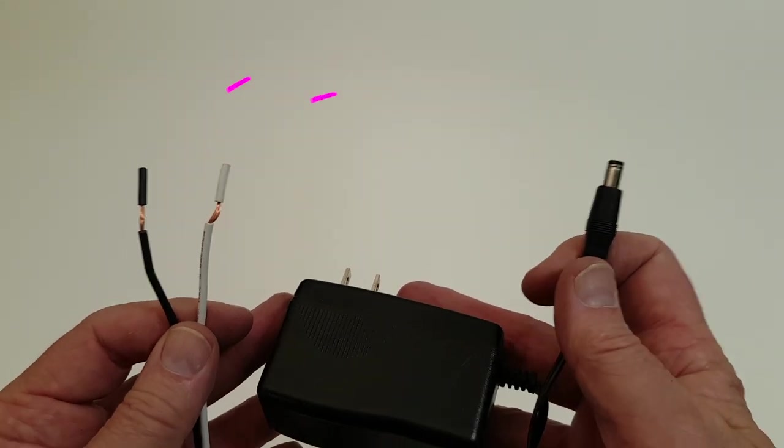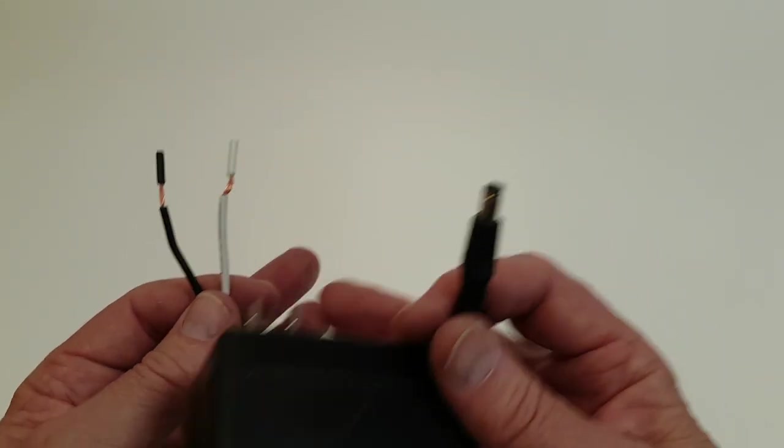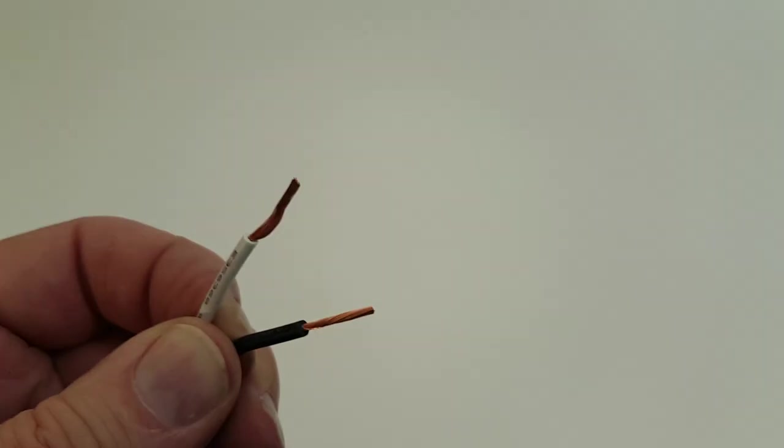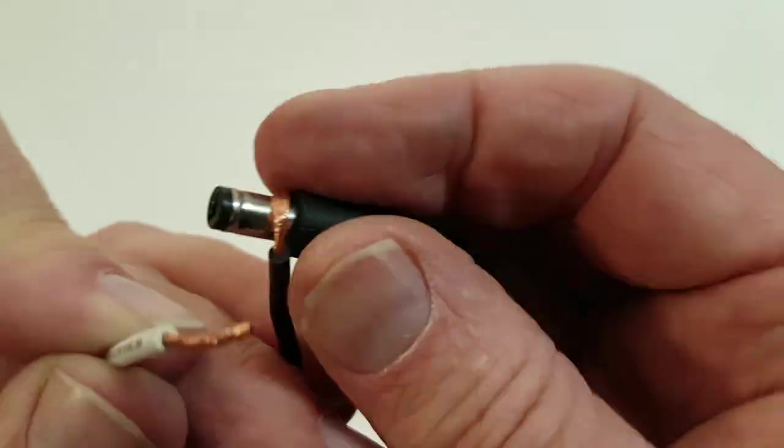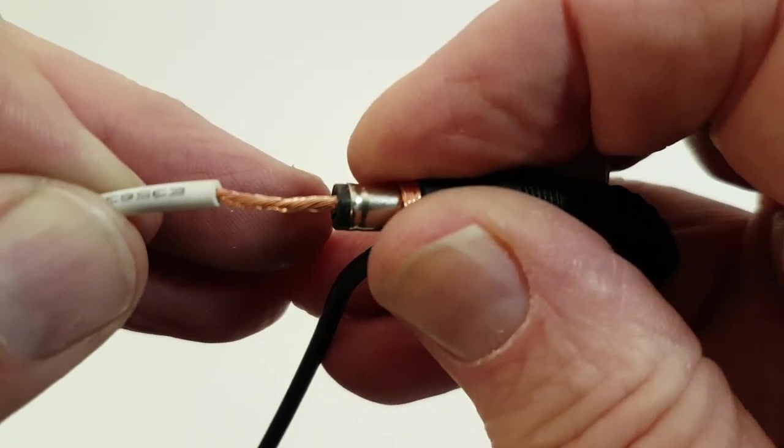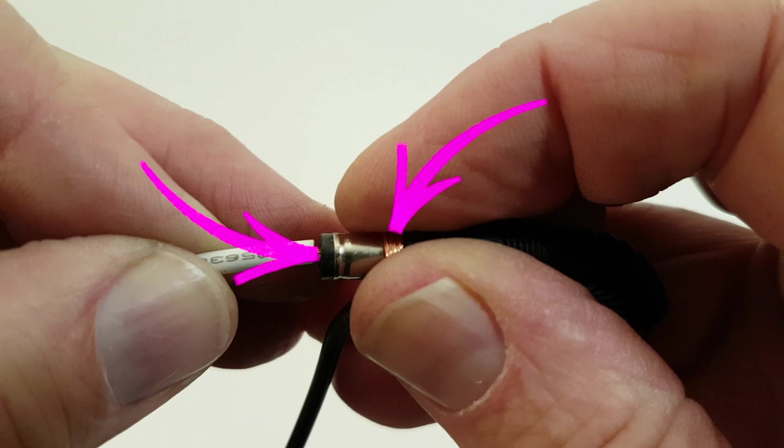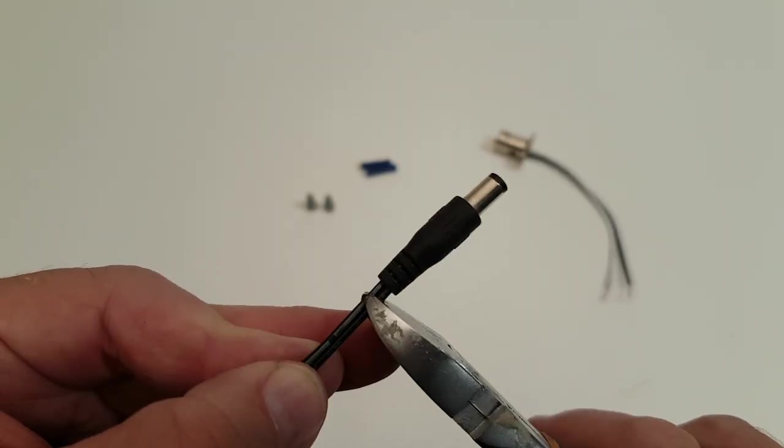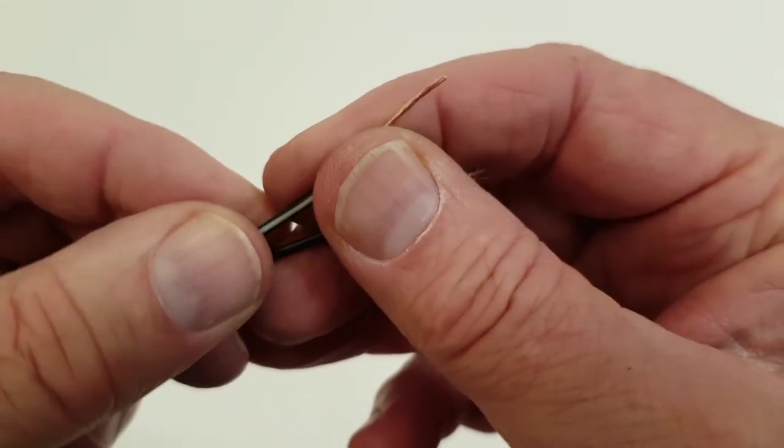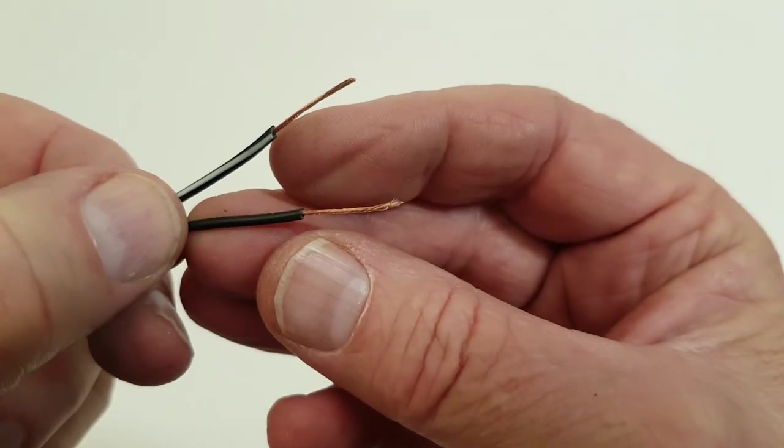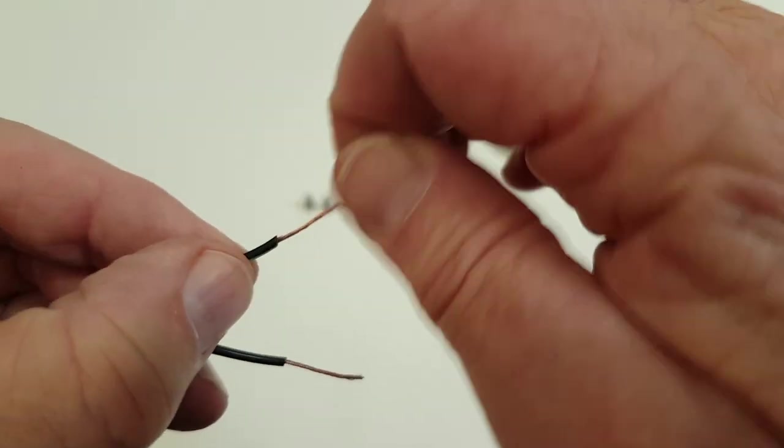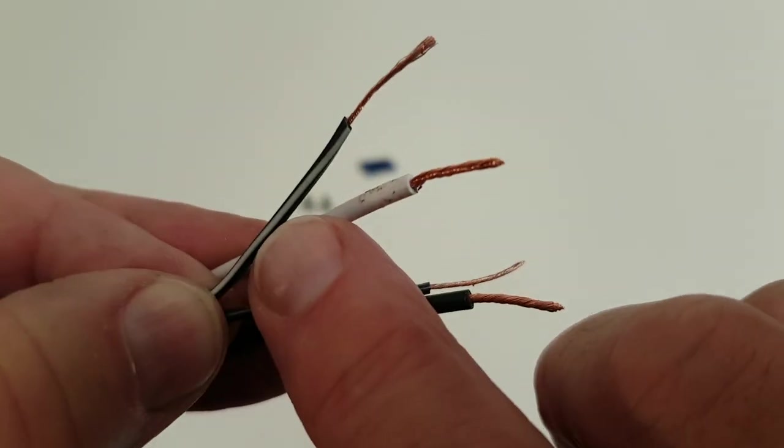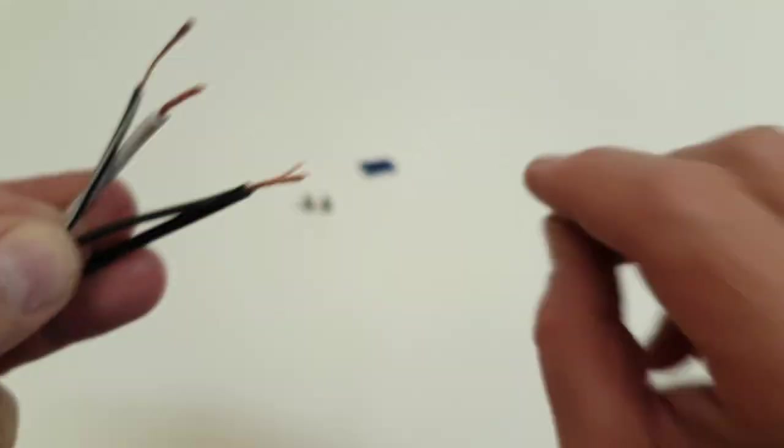To attach the two wire ends to the unplugged transformer there are three options. After exposing the copper wire at the ends the easiest option is to tape one wire end to the outside of the transformer's barrel connector and one to its inside with electrical tape. Or cut off that barrel connector and after separating the wires for an inch or two carefully strip the insulation off the ends.